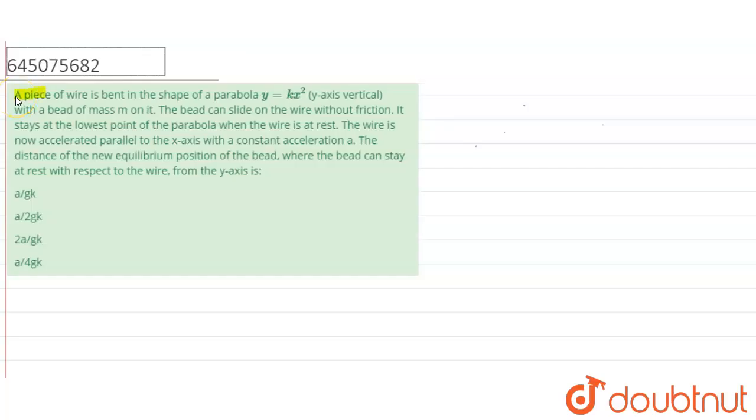Hello everyone, a piece of wire is bent in the shape of parabola y is equal to kx square. Y axis is vertical. With a bead of mass m on it, the bead can slide on the wire without friction. It stays at the lowest point of the parabola when the wire is at rest.